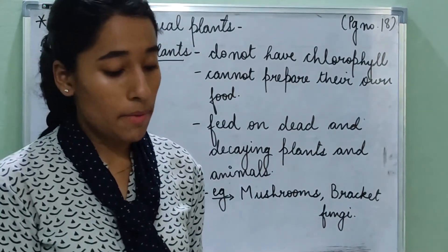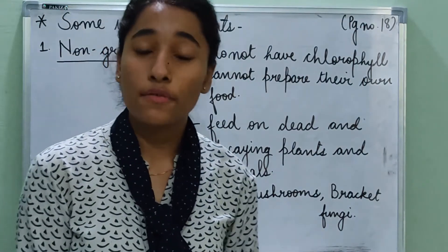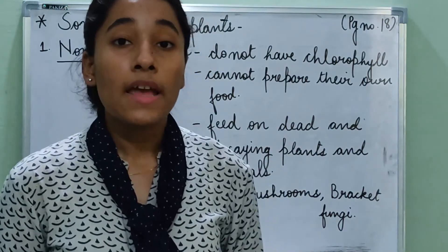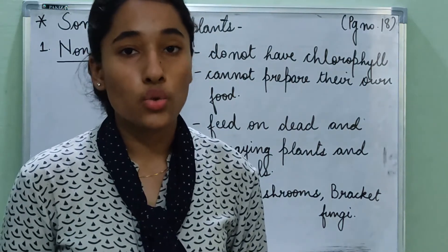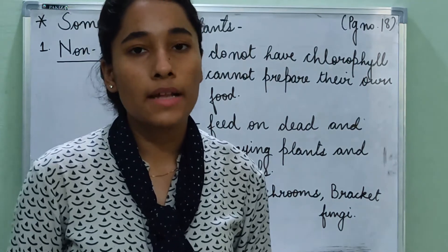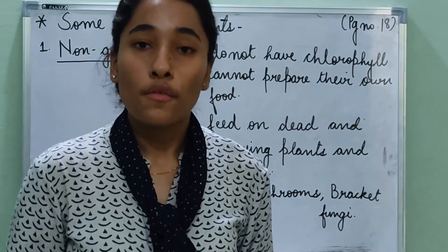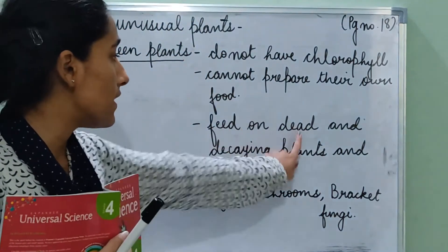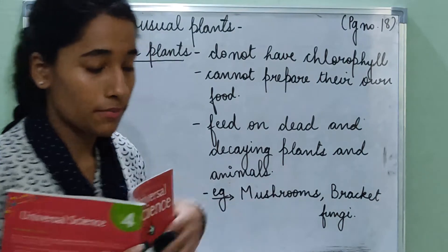These plants depend on dead and decaying plants and animals for food. Since they cannot make their own food, they feed on or depend on plants and animals that are dead and decaying.